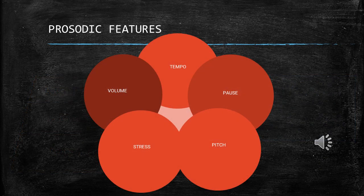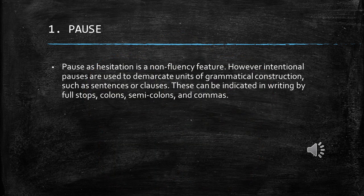Prosodic features are divided into five parts: tempo, pause, pitch, and stress. The first is pause — pause as hesitation is a non-fluency feature. However, intentional pauses are used to demarcate units of grammatical construction such as sentences or clauses. This can be indicated in writing by full stops, colons, semicolons, and commas.